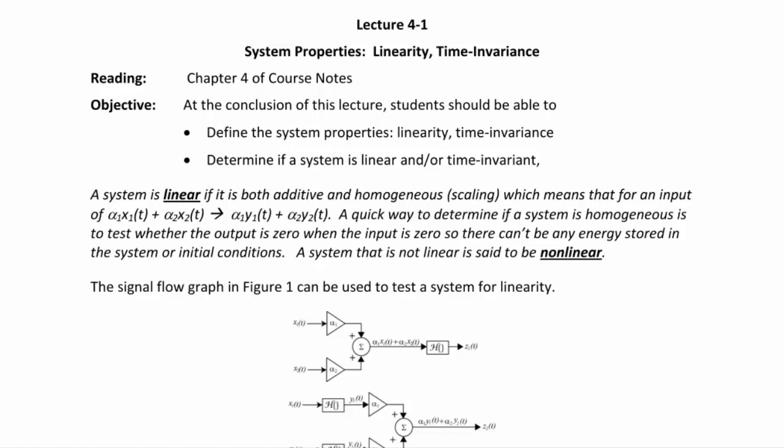A system is linear if it is both additive and homogeneous, which means it satisfies properties of addition and multiplication. For an input alpha_1 x1(t) plus alpha_2 x2(t), the output would be alpha_1 y1(t) plus alpha_2 y2(t). A quick way to determine if a system is homogeneous is to test whether the output is zero when the input is zero, so there cannot be any energy stored in the system or any initial conditions.